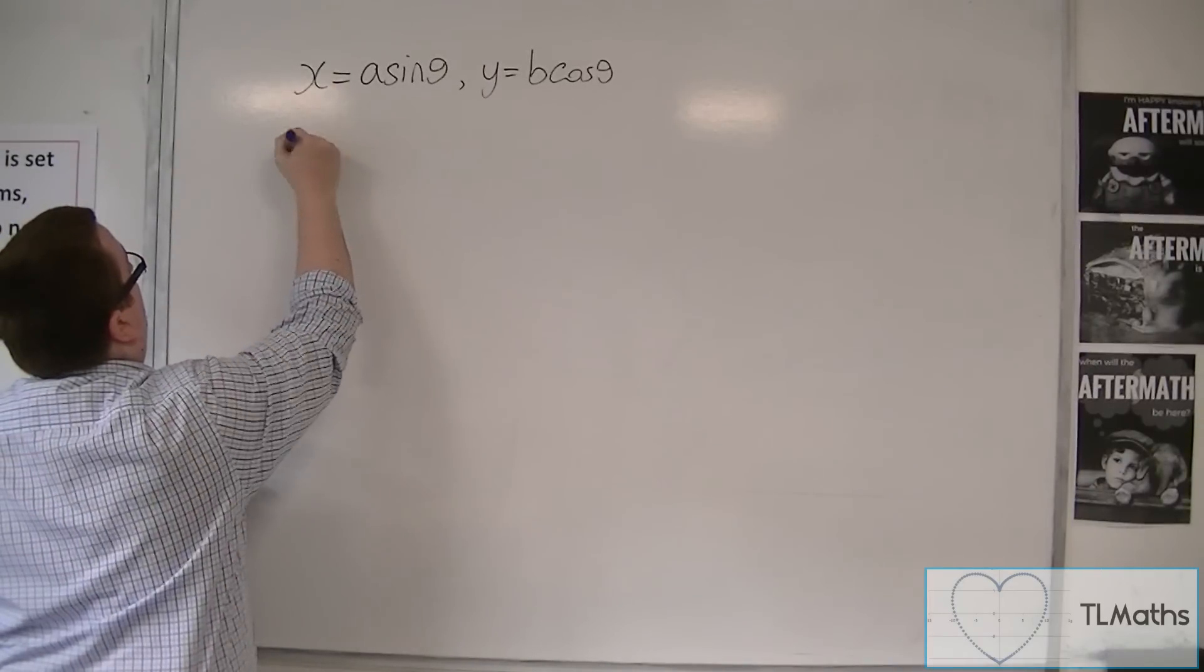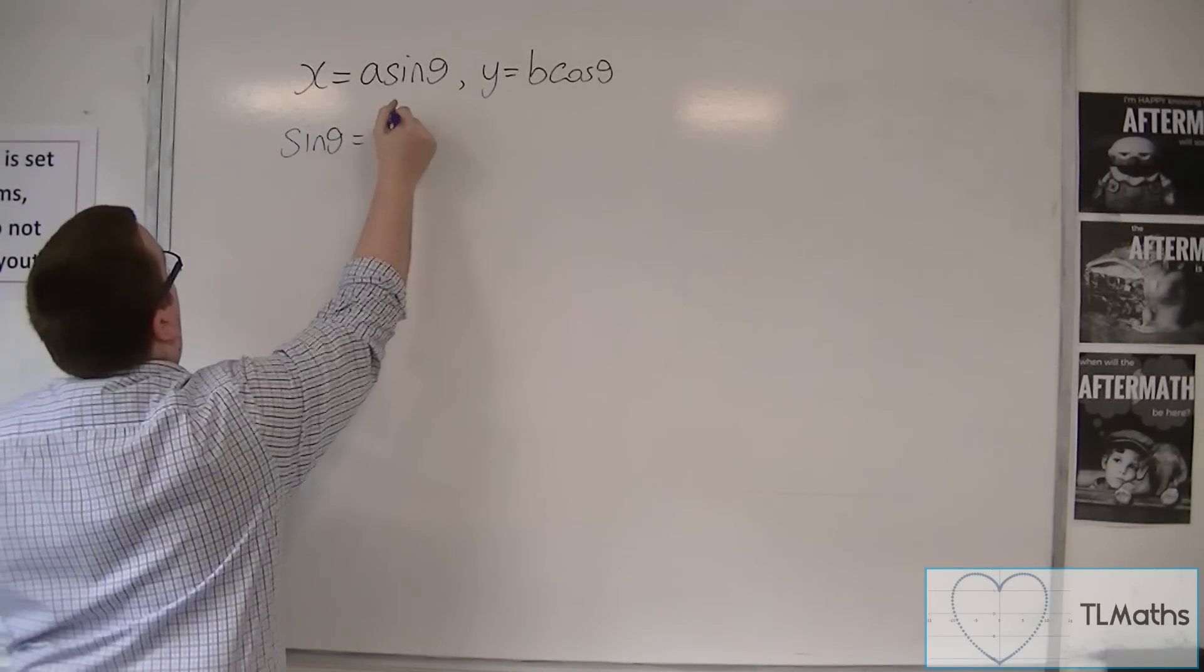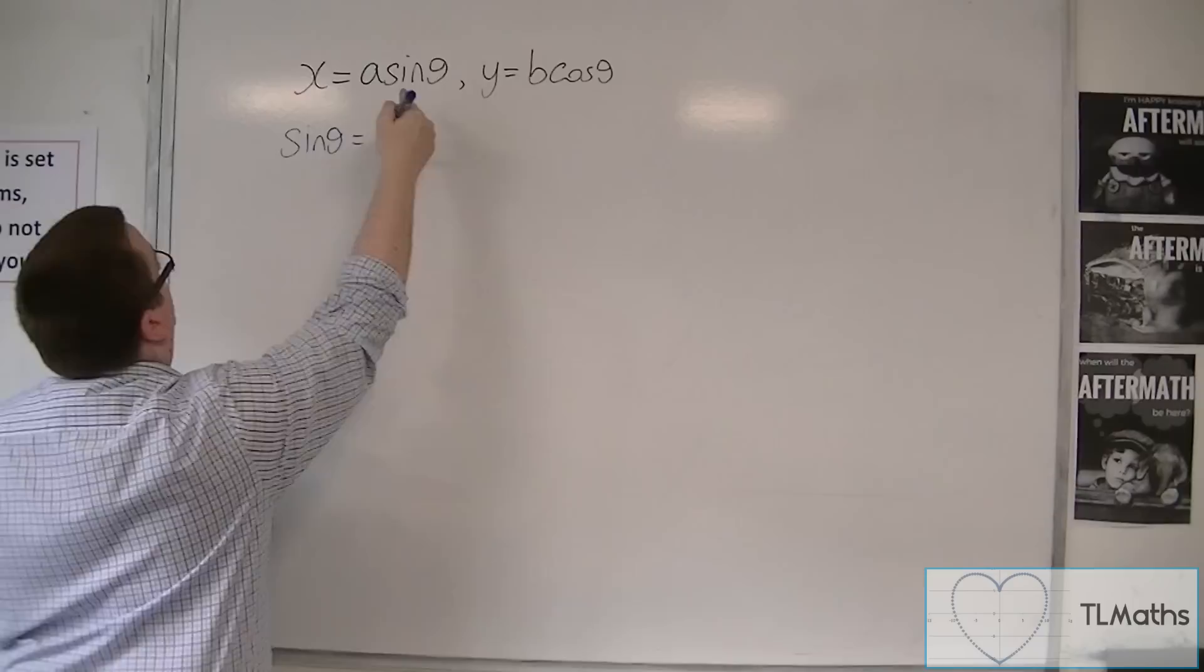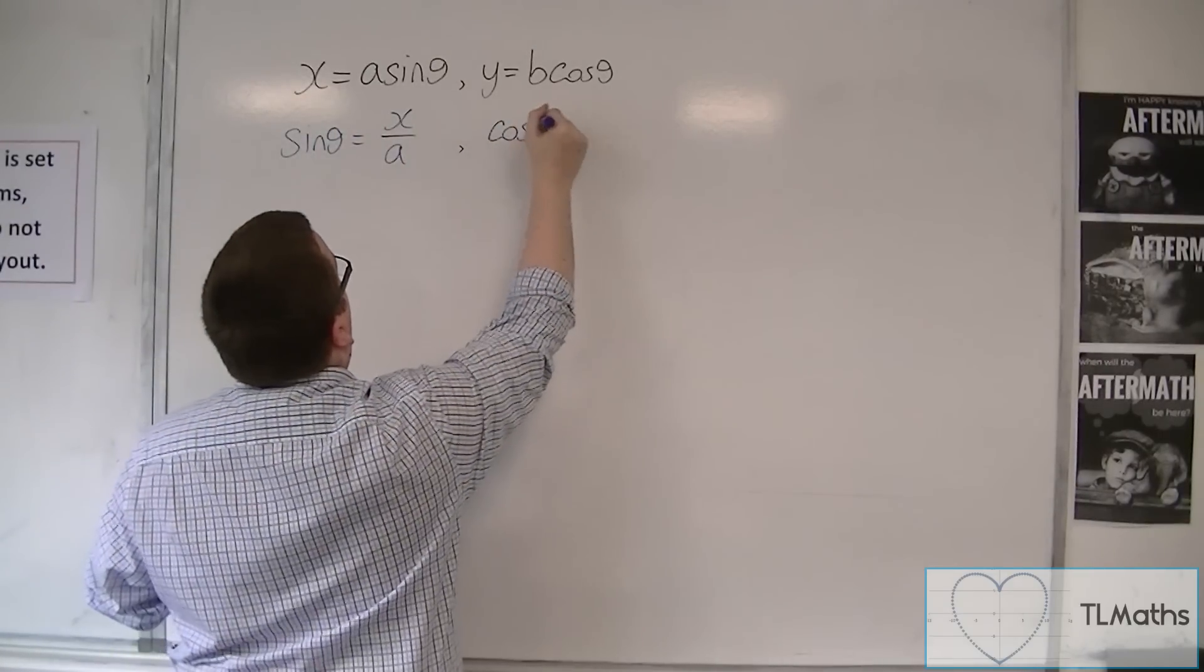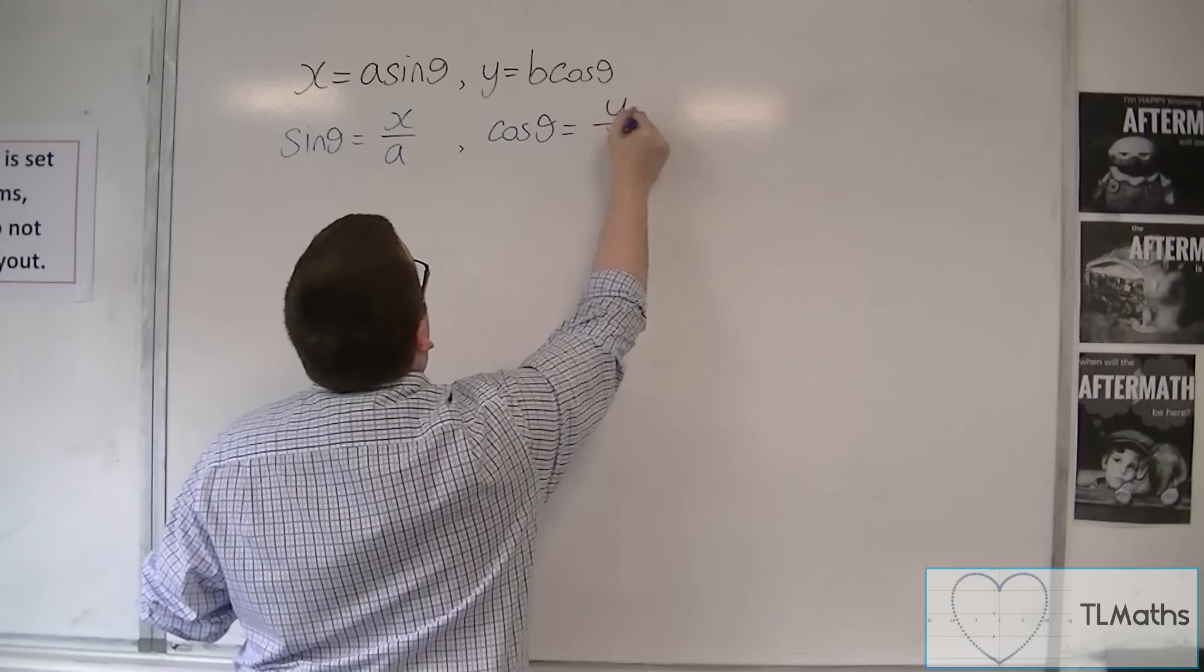So from this one, we're going to get sine theta is equal to X over A, dividing both sides by A, and here we're going to get cos theta is equal to Y over B.